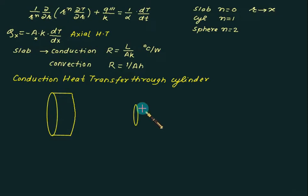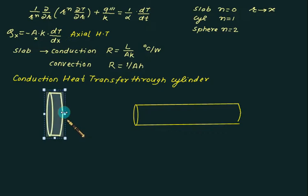Suppose we have a disc - a flat plate. When we say flat plate it is radial heat transfer? No, it is only axial heat transfer. When we have a thin cylinder whose cross section area is very small compared to radial area...